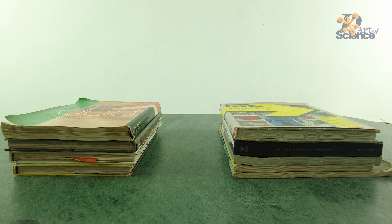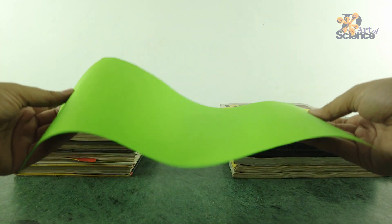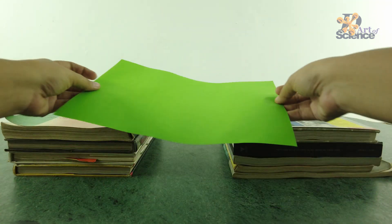First, we need to make two piles of books of equal height. Keep them a few centimeters apart and then keep a thin flimsy A4 sized paper perched on top of these books.